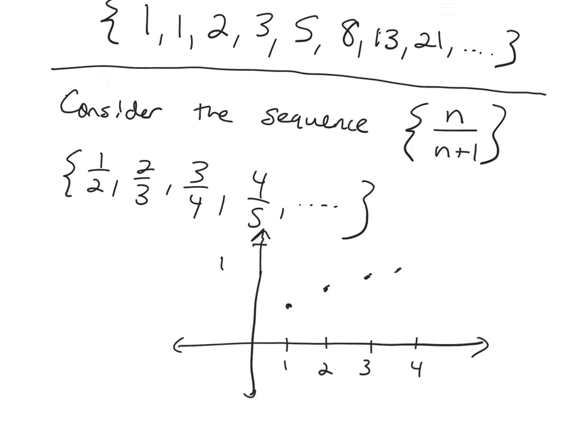What does it look like is happening to these points as I go on further down the line? These points, so if I do another one. If I do 5, it would be 5 sixths. 6, it would be 6 sevenths. They're getting closer to 1. Getting closer and closer to 1.